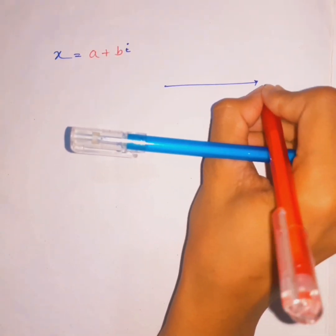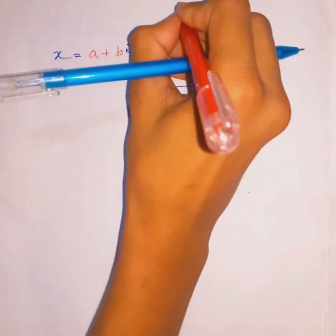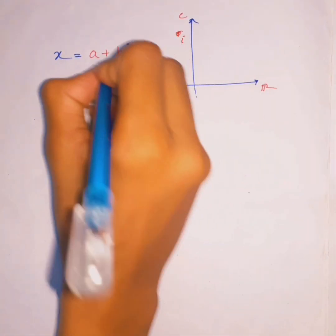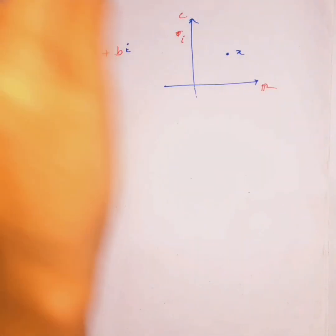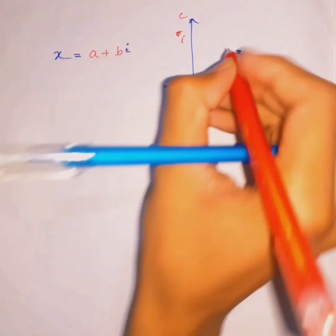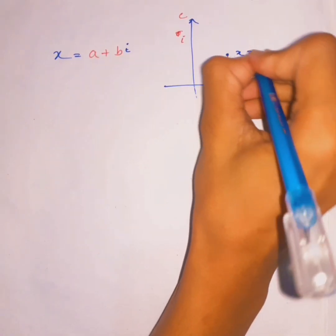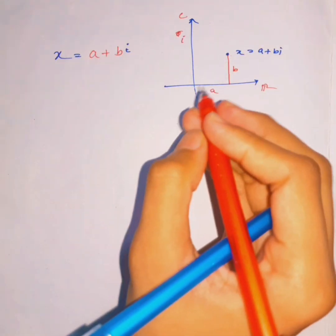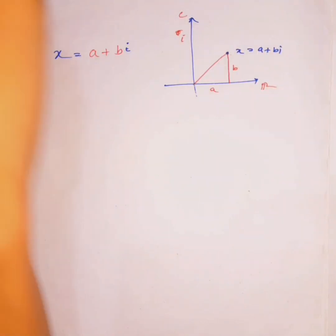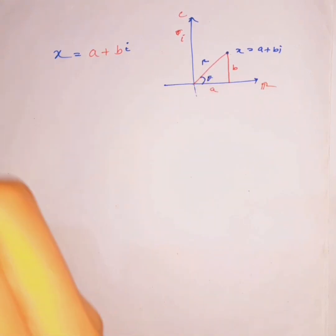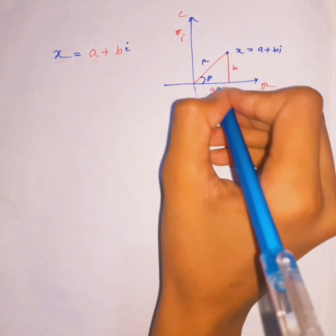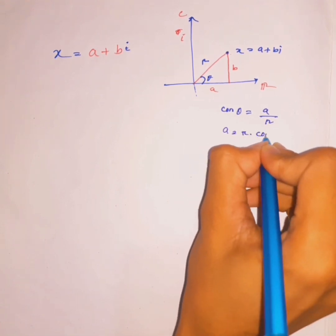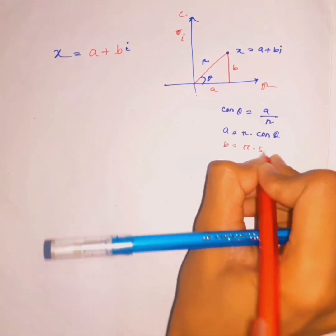Suppose this is the real axis and this is the imaginary axis. If the point x is plotted here, then the horizontal distance is a and the vertical distance is b. We call the magnitude r and the angle θ. From trigonometry: a equals r·cos(θ) and b equals r·sin(θ).